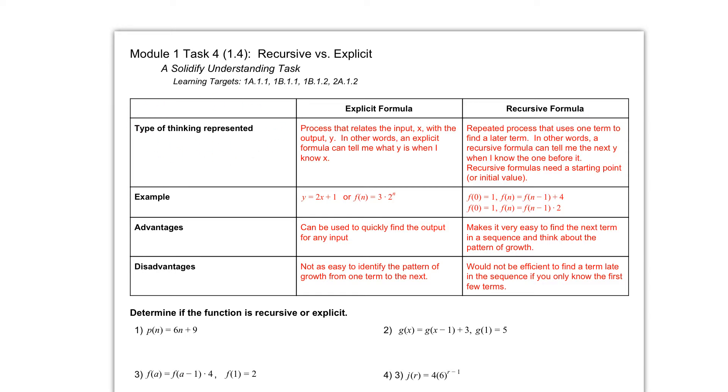The first thing that we're talking about is the type of thinking that's represented. So the type of thinking in an explicit formula says that a process that relates the input x with the output y.